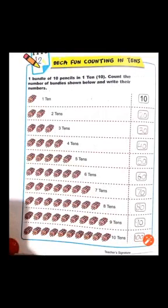Like this — one ten equal to ten, two tens equal to twenty, three tens equal to thirty, four tens equal to forty, five tens equal to fifty, six tens equal to sixty, seven tens equal to seventy, eight tens equal to eighty, nine tens equal to ninety, and ten tens equal to hundred. You will write here: ten, twenty, thirty, forty, fifty, sixty, seventy, eighty, ninety, and hundred.